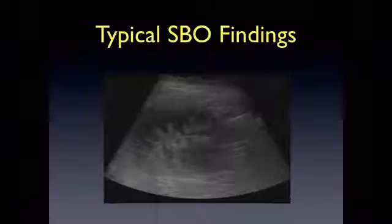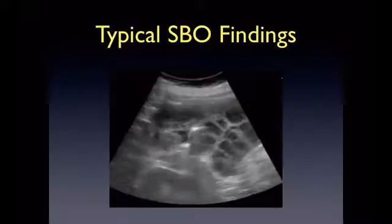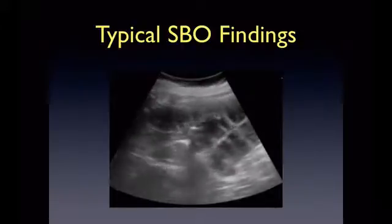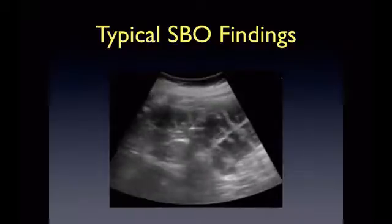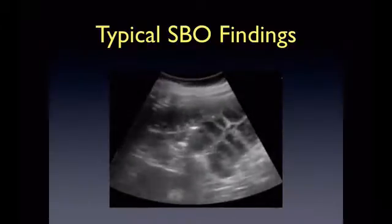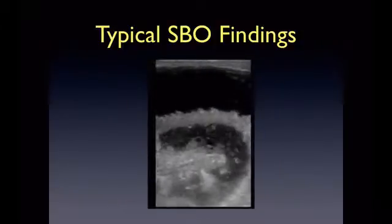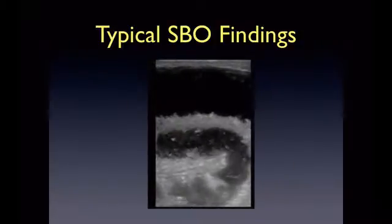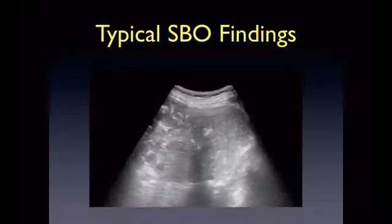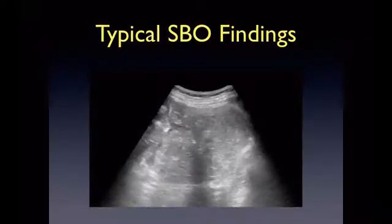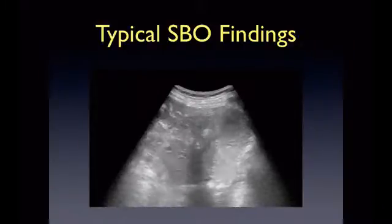This image shows dilated bowel loops with a clear visualization of the keyboard sign. This video clip is a classic view of SBO with dilated loops of bowel and prominent valvula connivans. This video clip shows the classic to-and-fro movement within bowel that is typical of SBO.